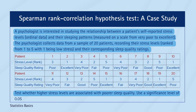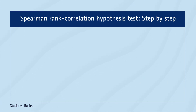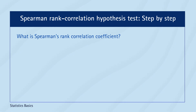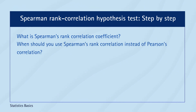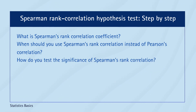The significance level is set at 0.05. Before proceeding with the hypothesis test, let's understand the concept of Spearman's Rank Correlation Coefficient. We'll explore its definition, its applicability compared to Pearson's correlation, and the methodology to test its statistical significance. This will provide a solid foundation for understanding the hypothesis and interpreting the results.